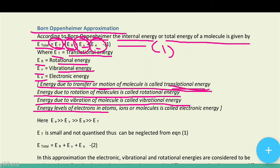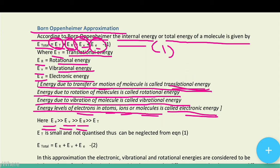Energy levels of electrons in atoms, ions, and molecules is called electronic energy. Among all four types, electronic energy is the largest, followed by vibrational energy, then rotational energy, and then translational energy.